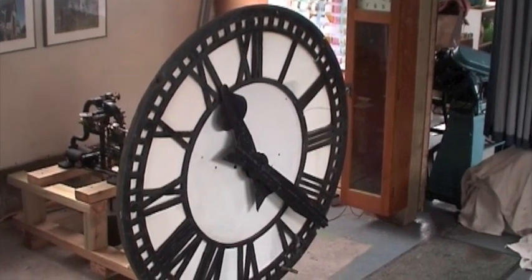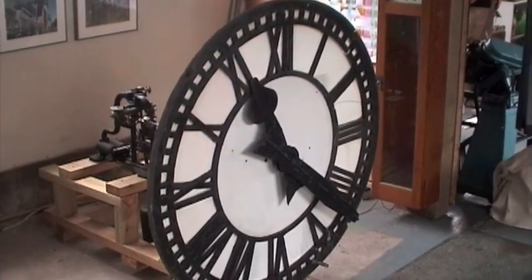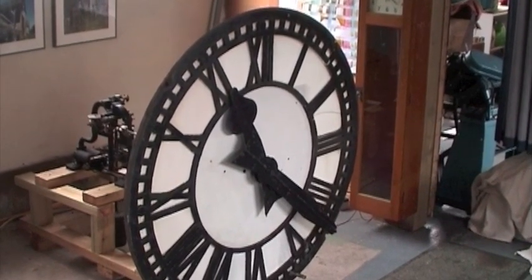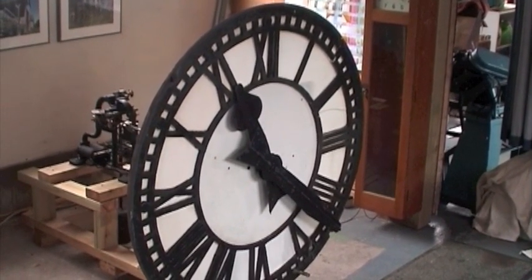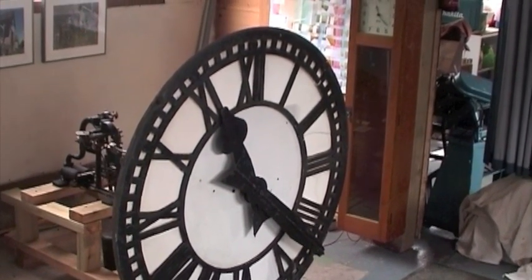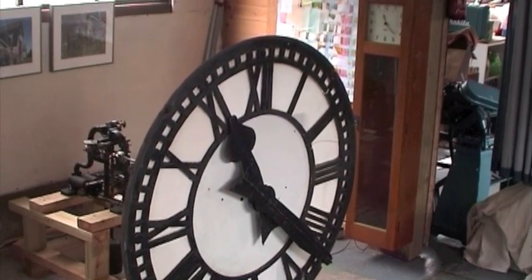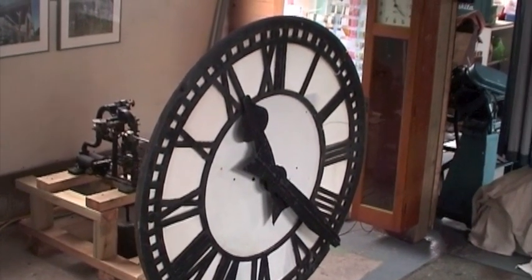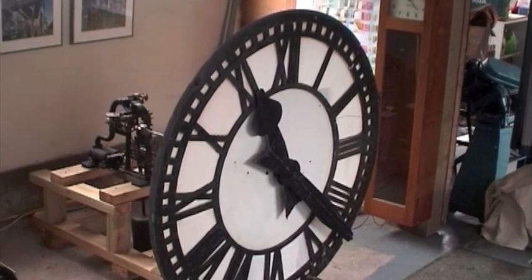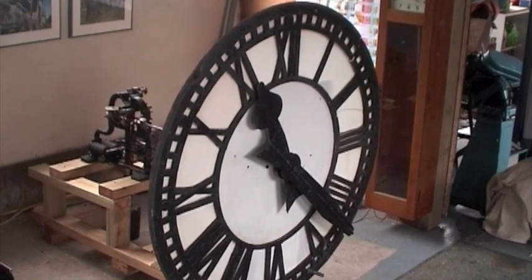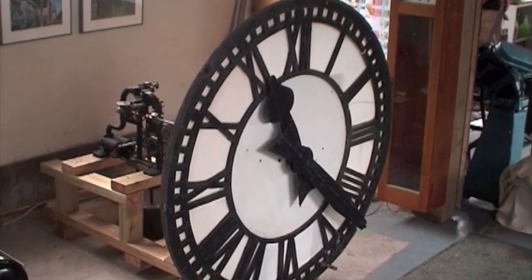This dual clock system was made by the English company Gents. It consists of a master clock which is a precision pendulum clock, the long case one in the background and what is called a waiting train clock in the foreground. It's driving a tower clock dial.